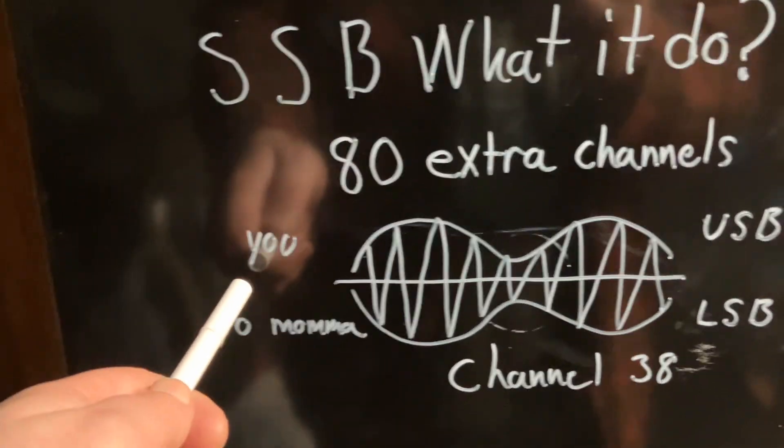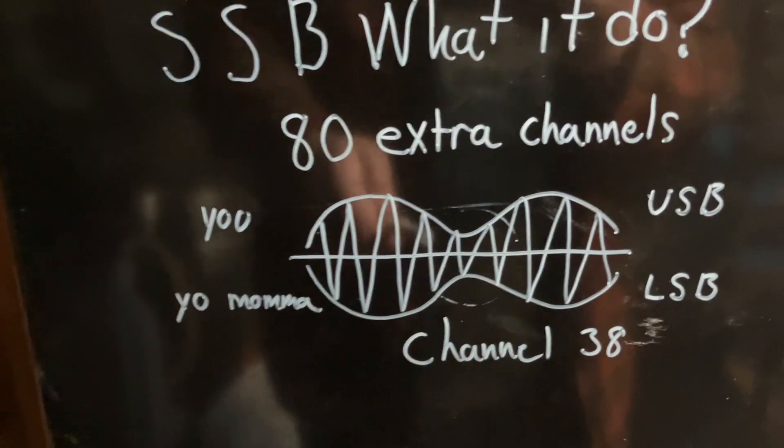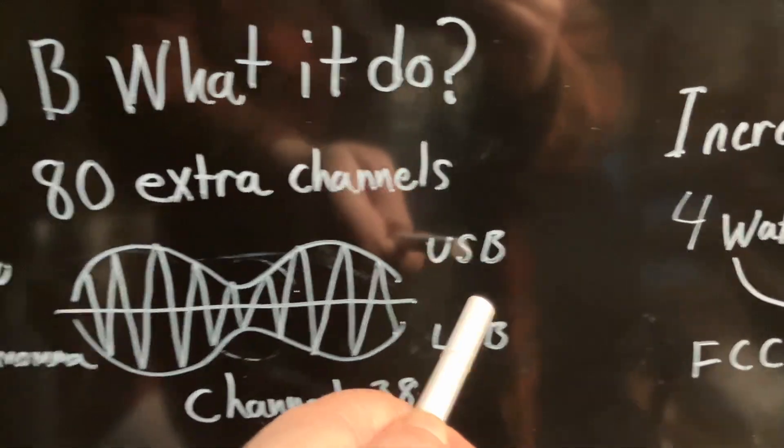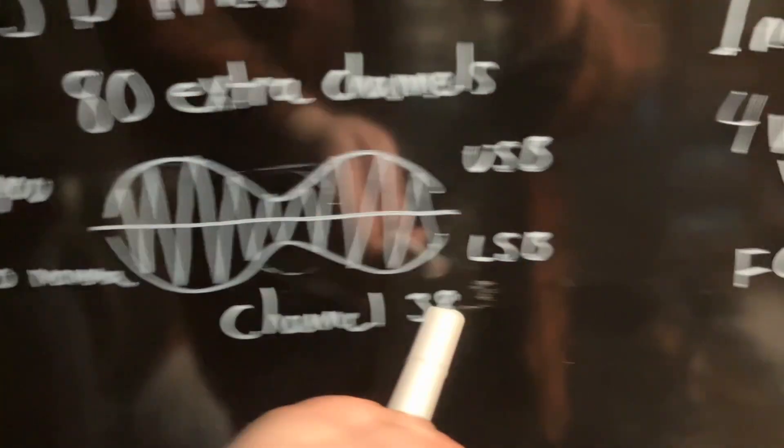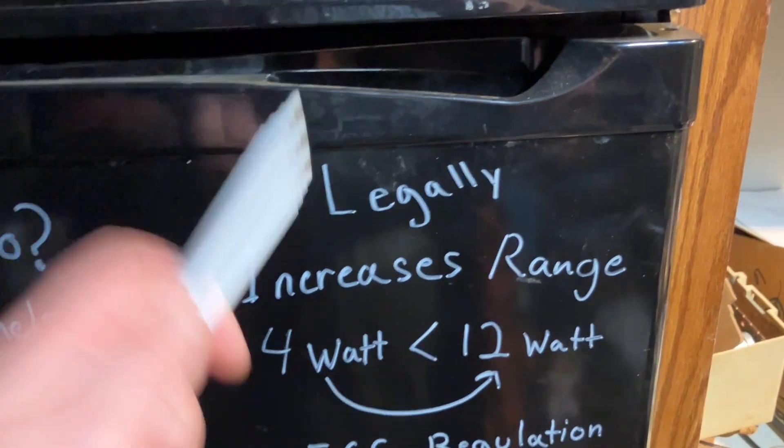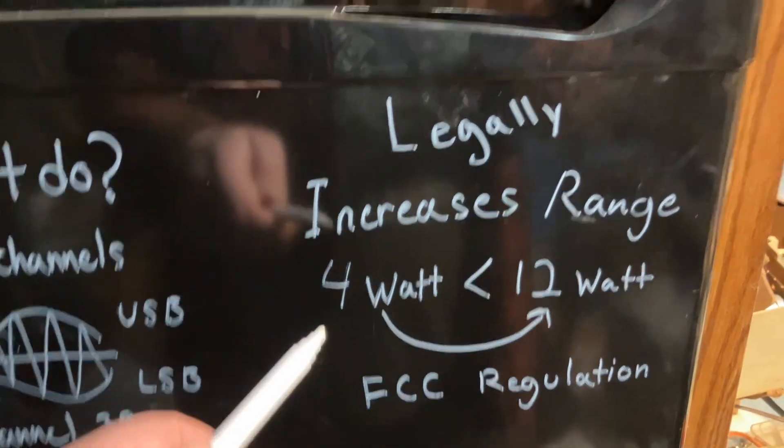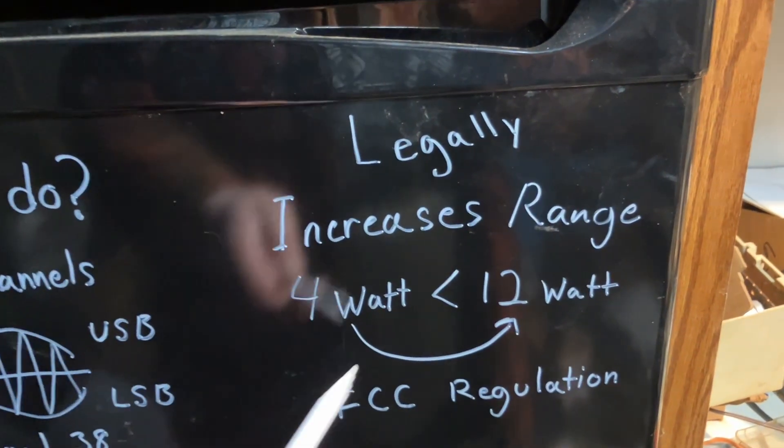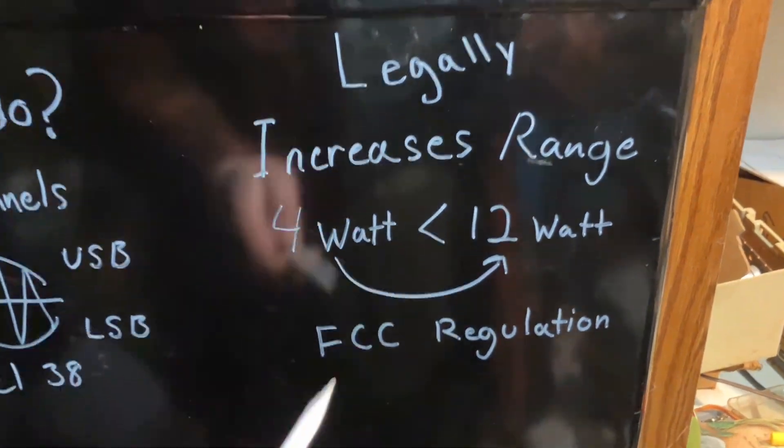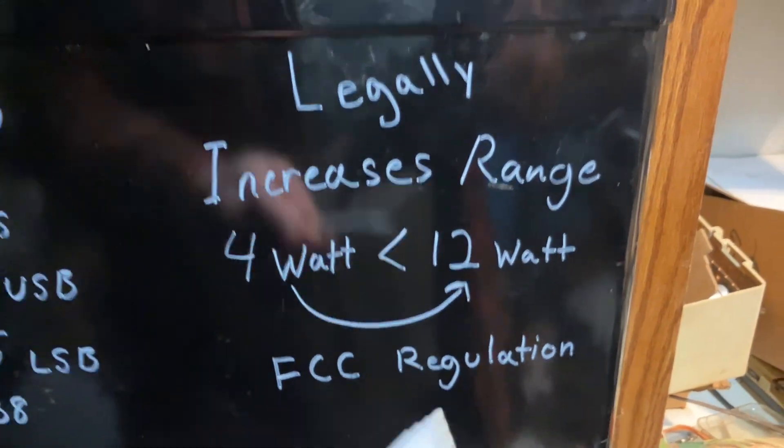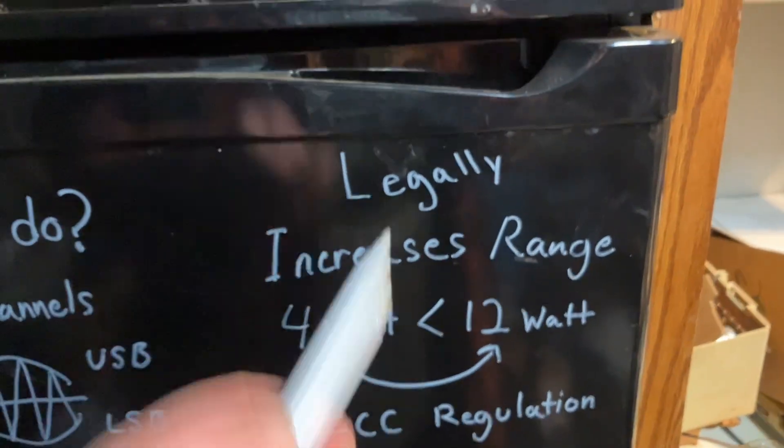Your radio has suppressed the lower sideband and you're transmitting on the upper sideband. Her radio has suppressed the upper sideband and she is transmitting on the lower sideband. Legally, that increases range. It boosts your power from four watts allowable to 12 watts. That's an FCC regulation, so if you really want to get more power and range without worrying about legalities, it's actually very much legal.